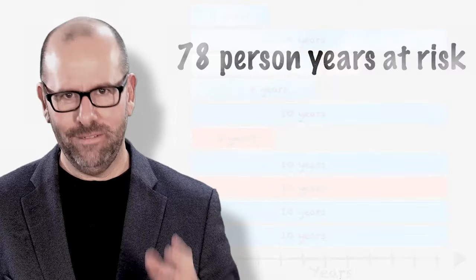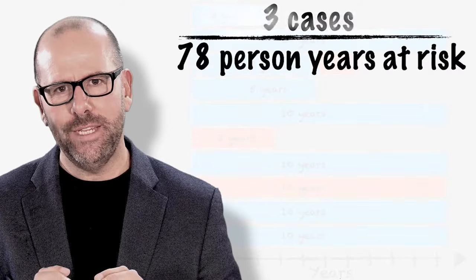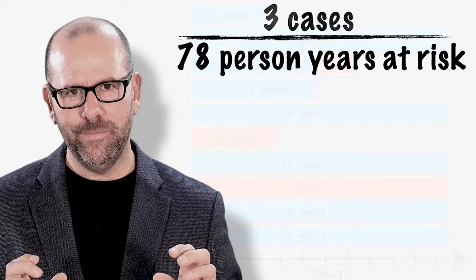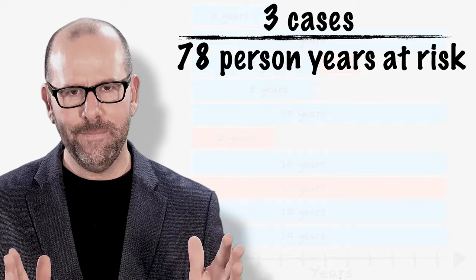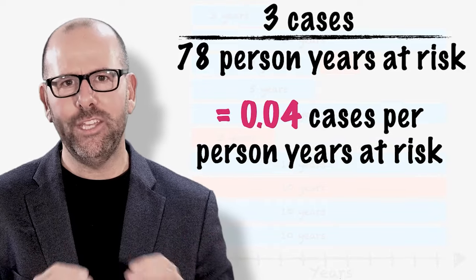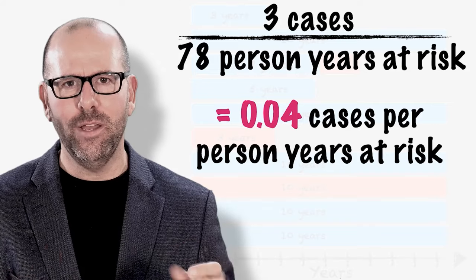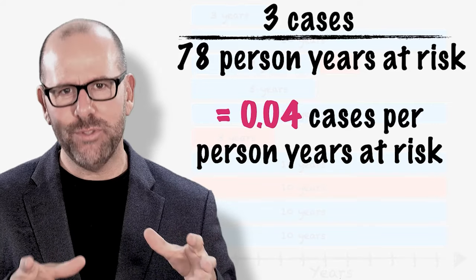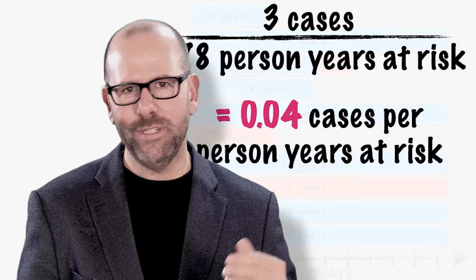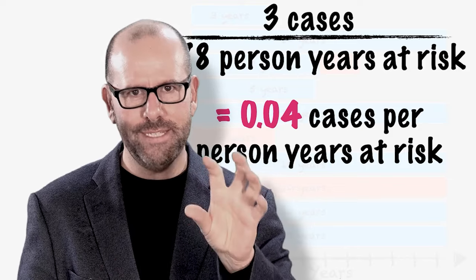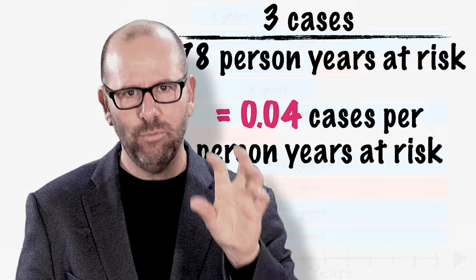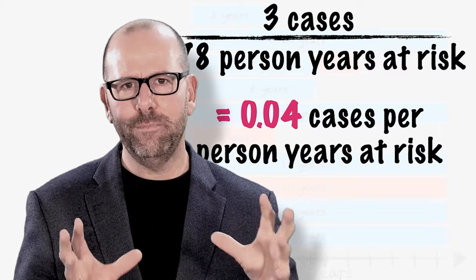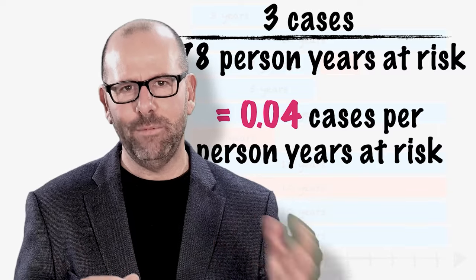And so what we could do, and in fact this is what we do, is we take the time contribution of each individual that they spent in the study. And we add them all together and we get a cumulative person time of the entire study. And we use that as the denominator. In other words, the three or four people that got cancer or whatever disease at the beginning, that's the numerator. We divide that by the cumulative person time as the denominator and we get the rate.